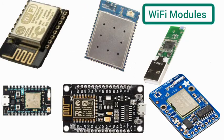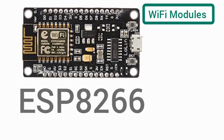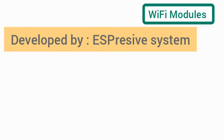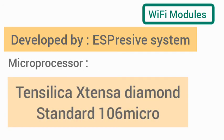Now let's see the ESP8266. The ESP8266 is a Wi-Fi module developed by Espressif. It uses a microprocessor by Tensilica — the Xtensa Diamond Standard 106Micro — created by the company Tensilica.